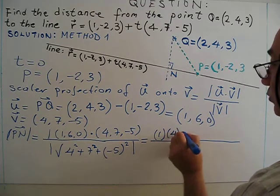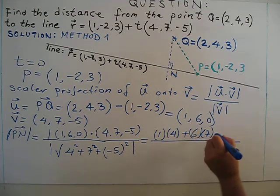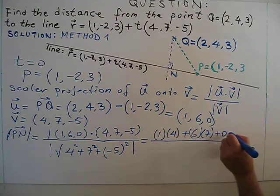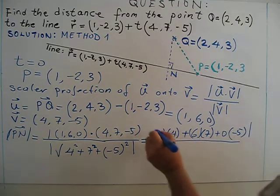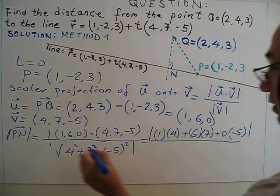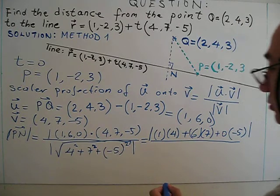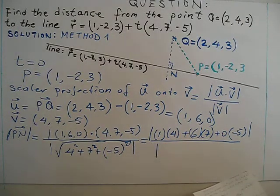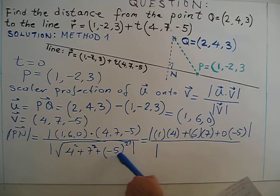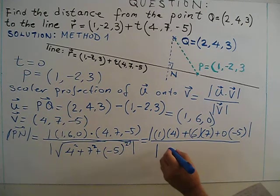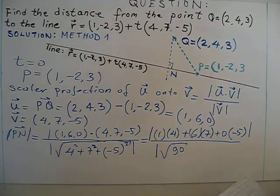So as you know u·v dot product, so what is the dot product? 1 times 4 plus 6 times 7 plus 0 times negative 5, and absolute value. OK, this is square root, so again absolute. So 4 squared plus 7 squared minus 5 squared is going to be root 90.